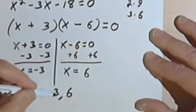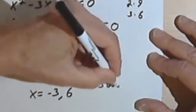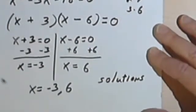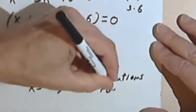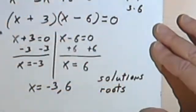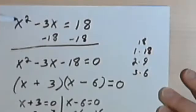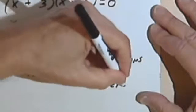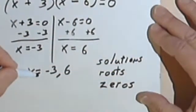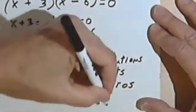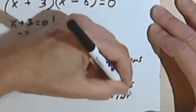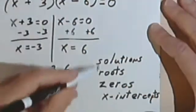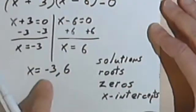These two numbers are called the solutions to the equation. But there are a number of different words that people use instead of solutions. Sometimes you'll hear people call them the roots of the equation. So if somebody says find the roots of this equation, you're going to do the same thing. Sometimes they're called zeros. That also means the same thing. And if people are thinking of graphs, then they're going to call these the x-intercepts.